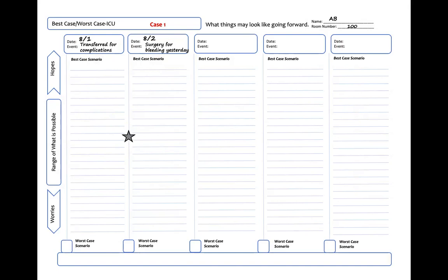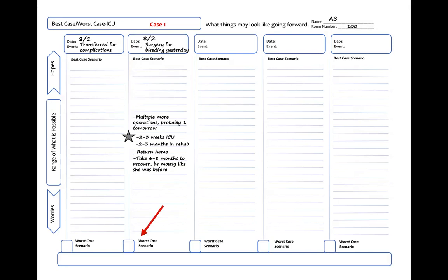She will need a few more operations, probably one tomorrow. She'll need some time in the ICU and a few months in rehab. We can probably get her home if things go well, and it will probably take six to eight months for her to fully recover, but we think she will be much like she was before all of this. For the worst case, I write that she could die. As a teaching point, I cluster the story around the star to better indicate where we are in the range of what is possible, so the overall trajectory becomes more clear.